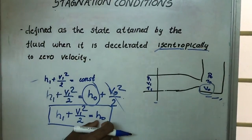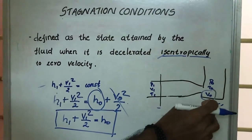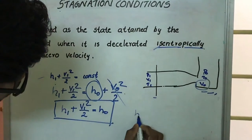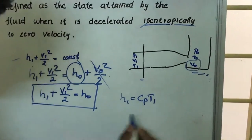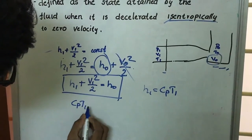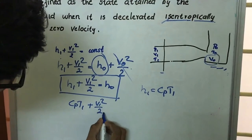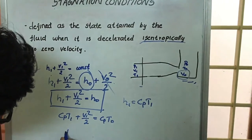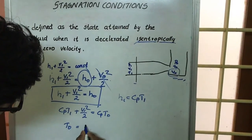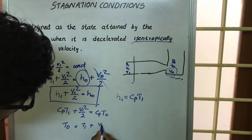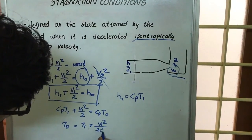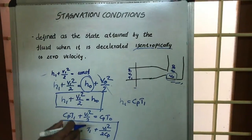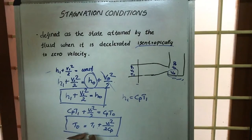h0 is the term representing the total enthalpy at the reservoir condition or the stagnation condition. Since h1 equals cp·T1, we get cp·T1 plus v1 squared by 2 equals cp·T0. We can represent the stagnation temperature T0 as T1 plus v1 squared divided by 2·cp.